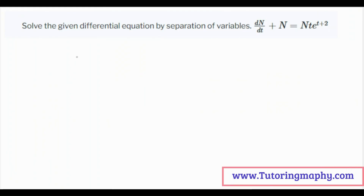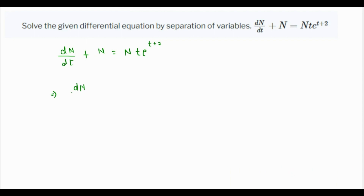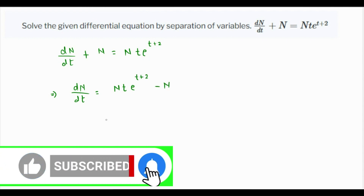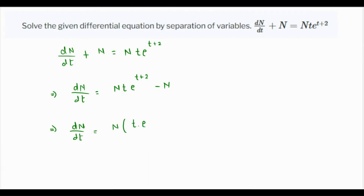We have to solve the differential equation by separation of variables. We have two variables, n and t. So it's dn/dt plus n equals n times t raised to e raised to t plus 2. Let's bring the n over to the other side by subtracting n from both sides, giving us dn/dt equals n times t times e raised to t plus 2 minus n.